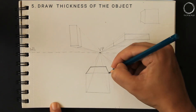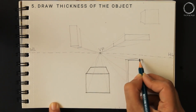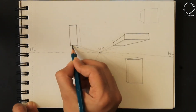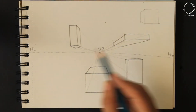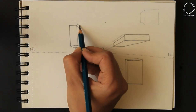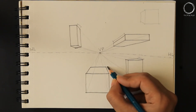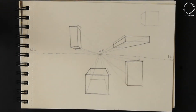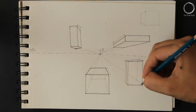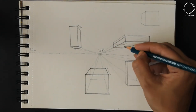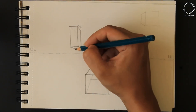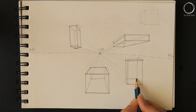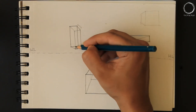You're darkening the lines of an opaque object. The thickness of every object is different. In case the object is transparent, we have to draw the lines from the rear side of the object. So these are the final transparent boxes. I hope you understand one point perspective with this video — if you did, please like, share and subscribe. See you, bye!